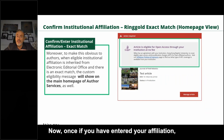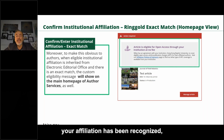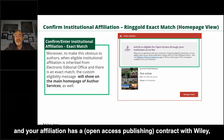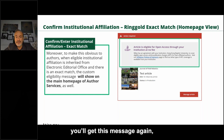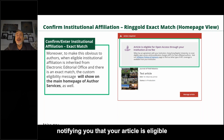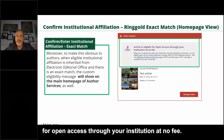Once your affiliation has been entered, recognized, and confirmed to have a contract with Wiley, you get a message again notifying you that your article is eligible for open access through your institution at no fee.